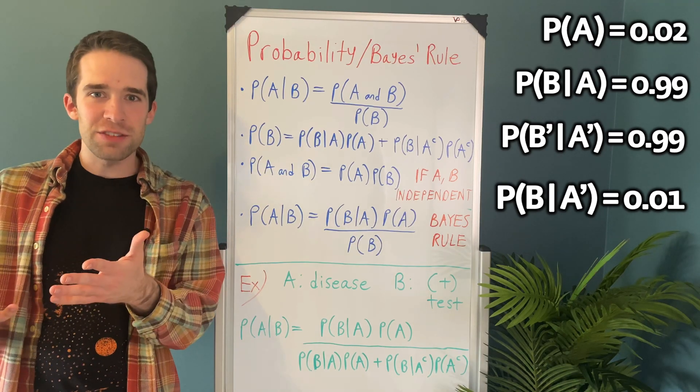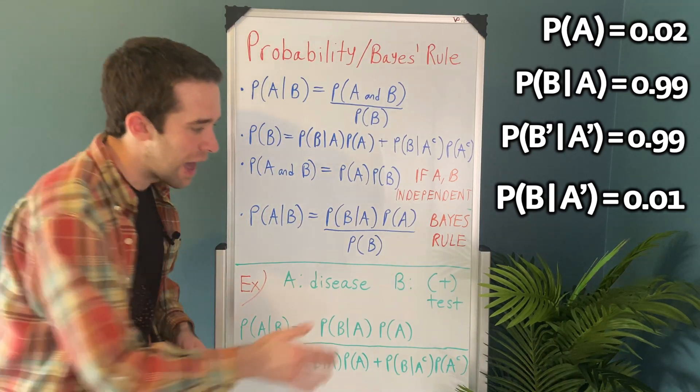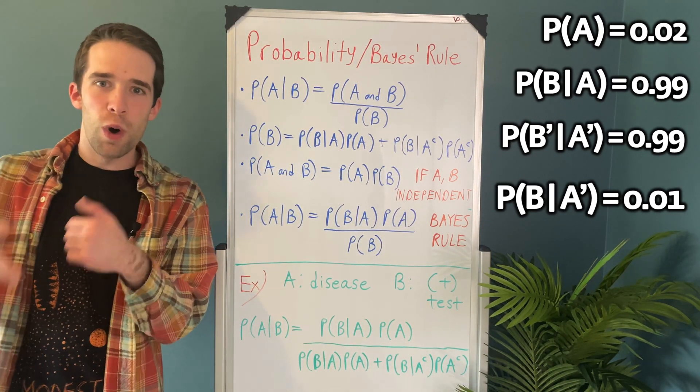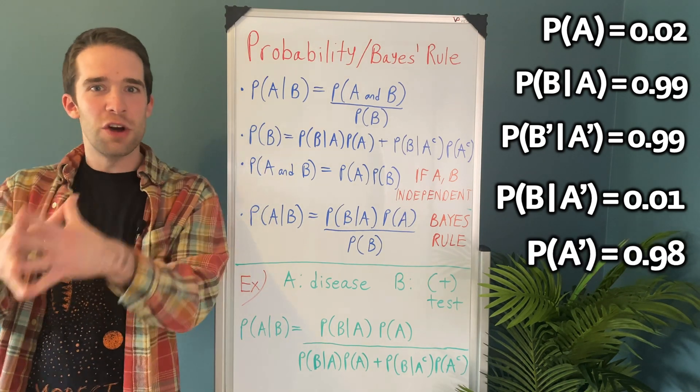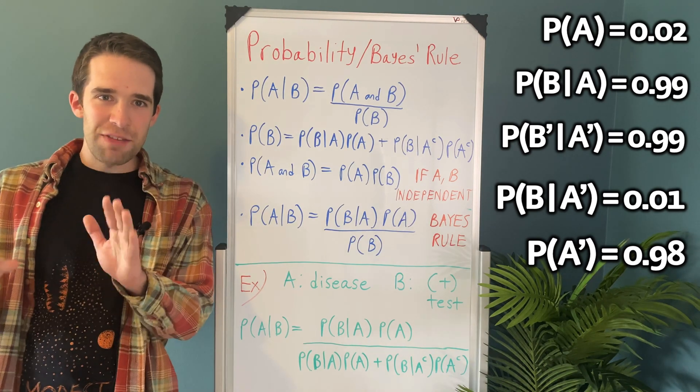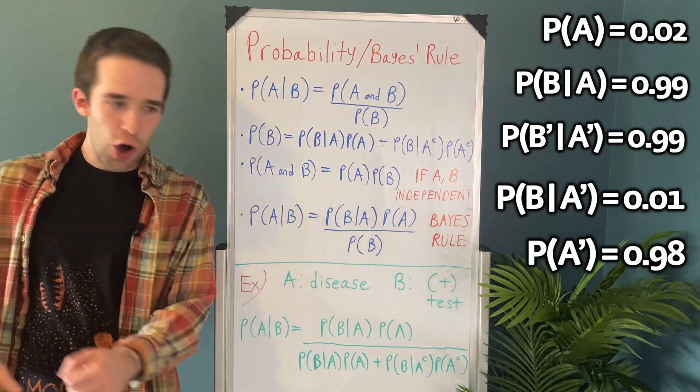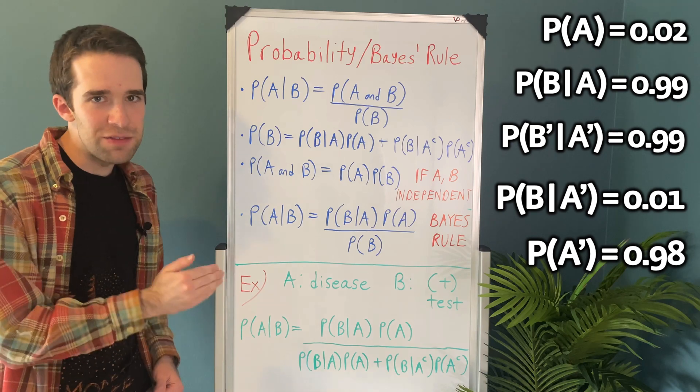And it's the exact same exercise to find the probability of A complement. That's just 1 minus 0.02. That gives us 0.98 or the probability that we don't have the disease. So we have everything that we need in the equation. All we have to do is solve for the probability of A given B.